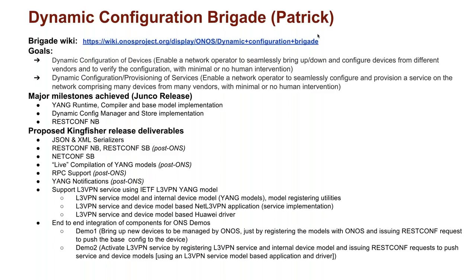For dynamic configuration, aligning to the roadmap, we have identified a four-line model under the demo. We've marked tasks for what we can do before the ONS demo and what we can take up after. Until the demo, we'll be finishing the JSON and XML serializers, the NetConf southbound, and support for L3 VPN service using the YANG model. We've identified two demos: one to activate the device model and another to activate the service model using dynamic configuration service. Post ONS, we'll focus on RESTConf northbound, completing more stats, RESTConf southbound, live compilation of models, RPC support, and YANG notifications.